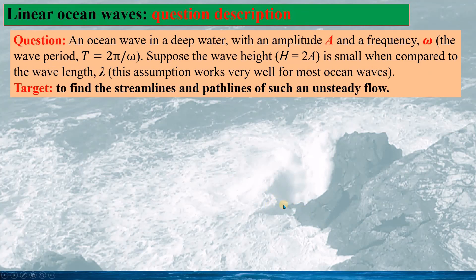The example is an ocean wave in deep water with an amplitude A and a frequency omega, so the period can be calculated as T = 2π/ω. We assume the wave height, the double of the amplitude, is small compared to the wave period. This assumption works very well for most ocean waves. The target is to find the streamlines and the pathlines in such an unsteady flow.